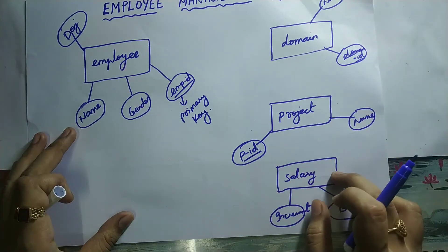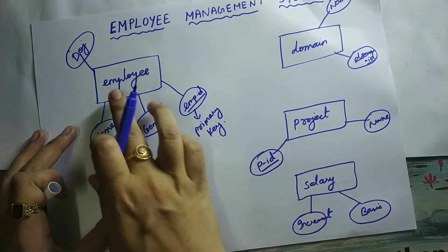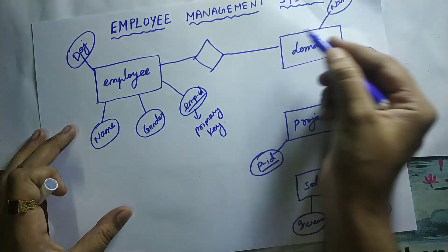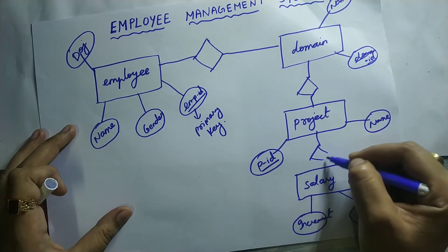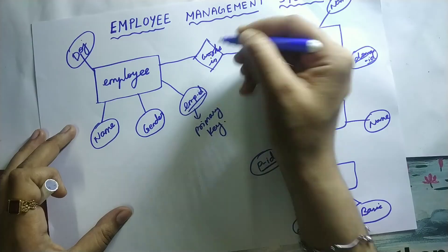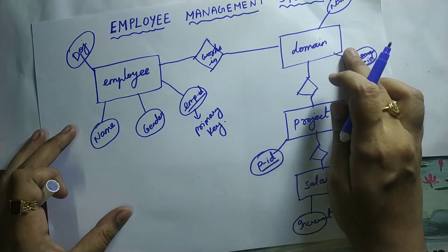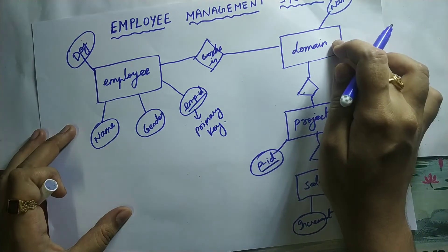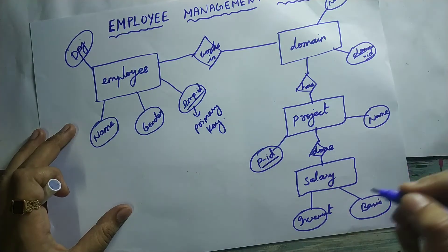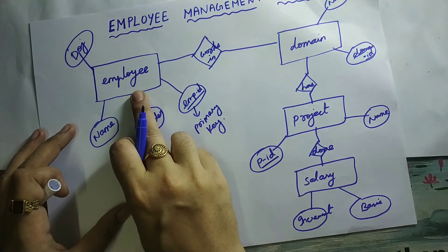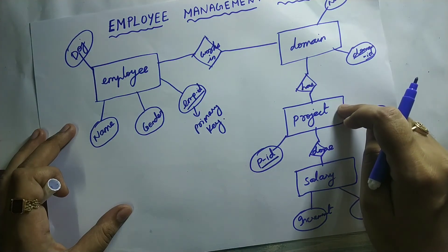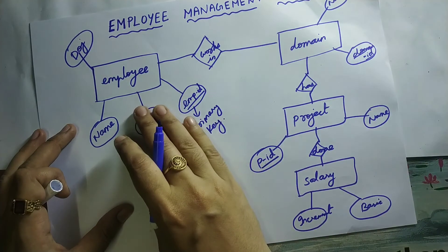Now we need to connect all the entities. A relationship is an operator which is going to connect all the entities, and it must be drawn inside a diamond box. The verb inside the diamond describes the relationship. An employee works in some domain, and in that domain projects will be given — so that domain has projects. If the project is done, the salary will be given. So the flow is: employee works under some domain, projects are assigned to the employee in that domain, and if the employee completes the project successfully, the salary is given.